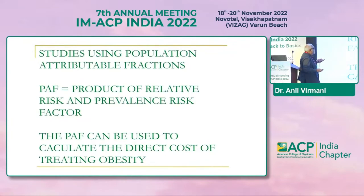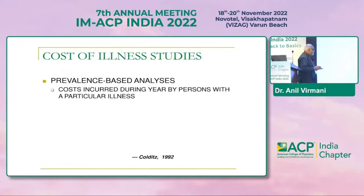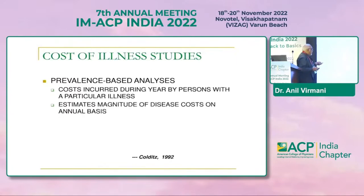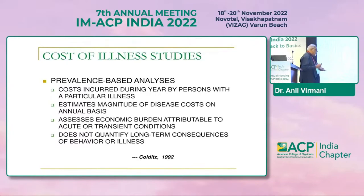There are various formulas used, including population attributable fractions, which are the product of relative risk and prevalence risk factor. Looking at prevalence-based studies: what is the cost incurred during a year by persons with a particular illness? They estimate the magnitude of disease costs on an annual basis, assess the economic burden attributable to acute or transient conditions, but do not quantify long-term consequences of the behavior of illness — that is very important.